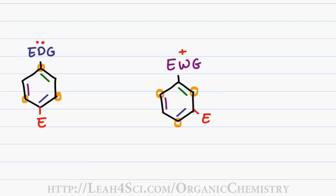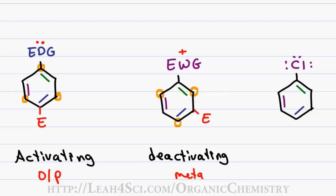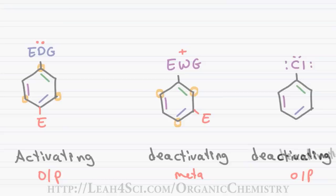In short, activating groups are ortho-paradirectors, deactivating groups are metadirectors. But now when we look at halogen, for example chlorine, we see a little bit of both. We see that chlorine is a deactivator and yet it's an ortho-paradirector. So the question is why is it ortho-paradirecting if it's deactivating and not activating, or if it's deactivating, why not metadirecting? So let's take a look.